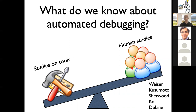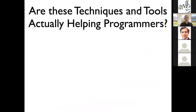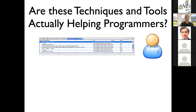Even more interesting was that for several of these developer studies, the results were negative — showing the technique was not particularly useful for developers, including Weiser's own paper on slicing. We decided to investigate ourselves whether the popular rank-based localization tools were actually helping programmers. We took a state-of-the-art technique, implemented it as an Eclipse plugin, and provided a view showing the ranking of statements along with information about the file, line of code, and suspiciousness value.